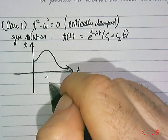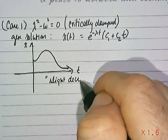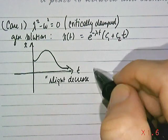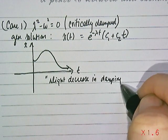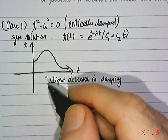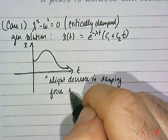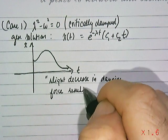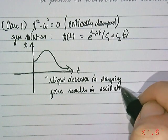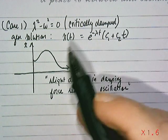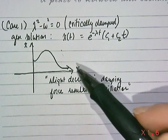One way to look at the word critically is that it means that a slight decrease in the damping, in other words you're damping the system and then you lighten up on it. So if you lighten up on the damping, a slight decrease in the damping force results in oscillations. The way I've drawn it, it does stop oscillating.